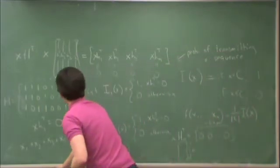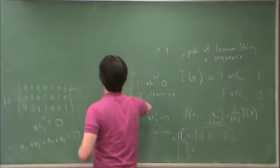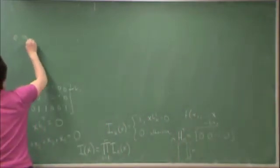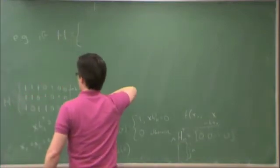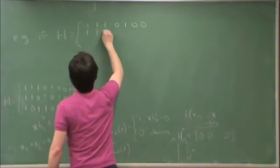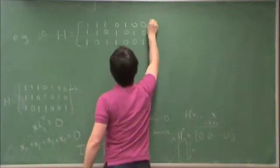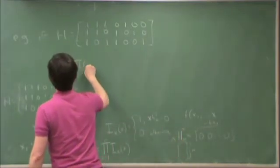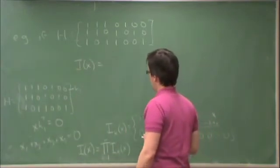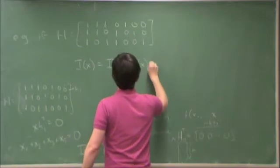So in this specific example, e.g., if H is a Hamming code parity check matrix, then i of x is equal to i1 of x times i2 of x times i3 of x.